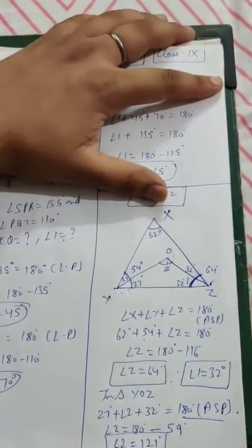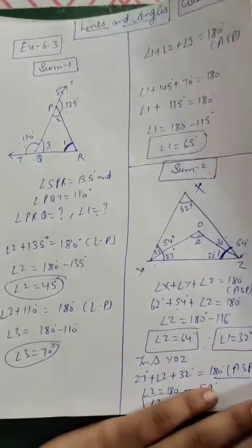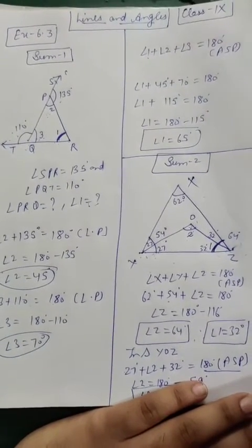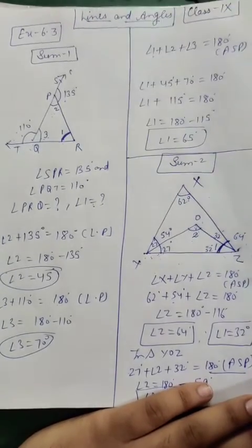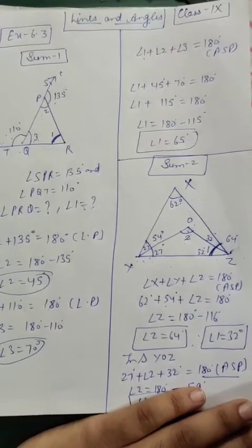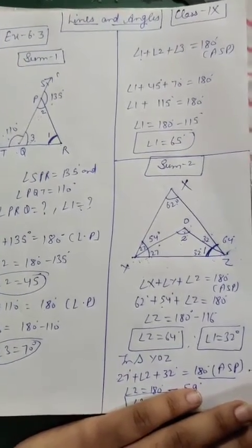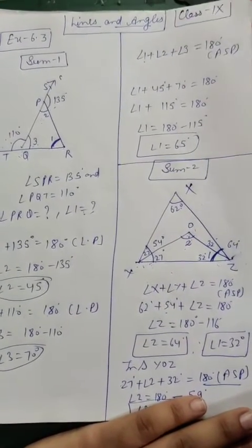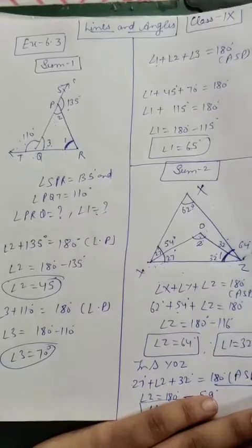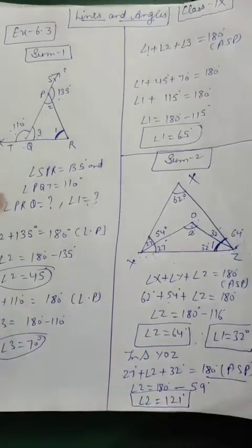So in this video we have done the first two questions of exercise 6.3. You have to try these two questions properly and also solve the solved examples, as they will be helpful. One more video will come on this chapter Lines and Angles, in which the last question, number 6, which is the most important, we will discuss. Questions 3, 4, and 5 you can try easily. One more video will be on Euclid's geometry, then we will start the revision. Almost 90 percent of PA1 syllabus is complete. Now it's up to you to do the revision and practice more and more. God bless you all, thank you.